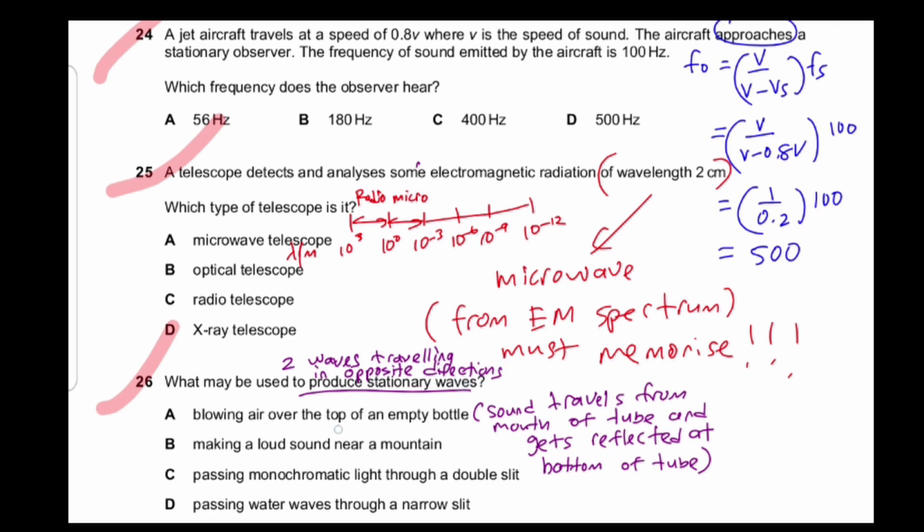So if you blow air over the top of the empty tube, the air will actually vibrate. The sound waves are actually vibration of air molecules. It will vibrate from the mouth of the tube along the tube until it hits the bottom and reflects. So then you will have two waves traveling in the opposite direction.